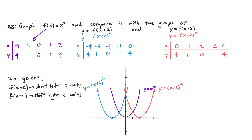From our examples, we observe that replacing the input x with (x + c) leads to a shift left c units, while replacing x with (x - c) leads to a shift right c units. These transformations are what we call horizontal shifts. So in this video we learned about vertical and horizontal shifts — adding or subtracting a number moves the graph in some direction. In the next video, we'll talk about scales.